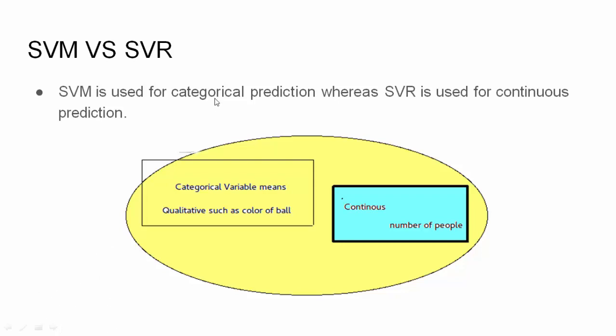If you want to have a categorical prediction, go for the classification model. If you have continuous prediction, go for the regression model. For example, if you want to predict the color of a ball, it is a qualitative representation, not quantitative.